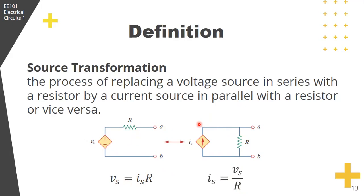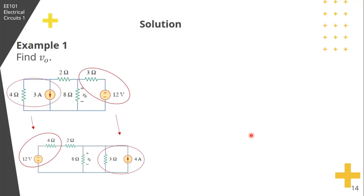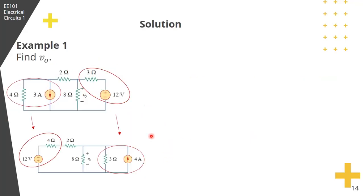Let's look at an example. Find V sub O. So for this, first let's transform the current and voltage sources. We have a parallel current source and resistor, and a series voltage source and resistor. Based on what we discussed earlier, we can transform these, resulting in this circuit.